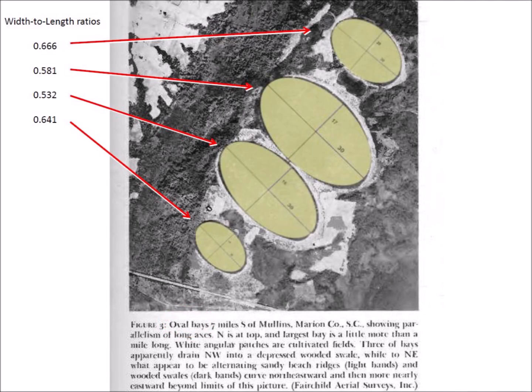However, the elliptical geometry of the bays can be verified easily even with the images that Professor Johnson had available when he wrote the book. Each Carolina Bay has a different width to length ratio, but ellipses with the corresponding ratios fit the outlines of the bays very well.